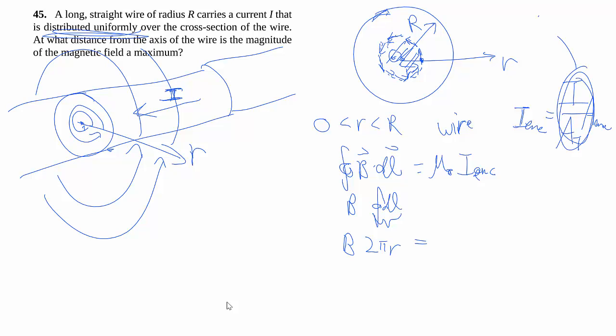And this thing here, sometimes it refers to current density, which we can denote by J. Just like how lambda used to be the linear charge density, and then we have sigma for area charge density, we can also talk about current density. So here I enclosed is I over, in this case, pi R squared, that's a total, multiplied by pi r squared.